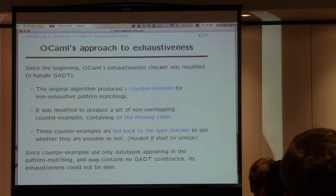And so what we did with Jacques Garrigue, my coauthor, was to modify this algorithm, which was pretty easy, to give not just one counterexample, but all the counterexamples. All the missing cases. And once you've got all the missing cases, what you can do, which is relatively easy, is you're going to feed back all of them, one by one, to a type checker, and check whether they are really possible or not.